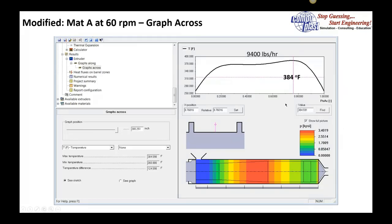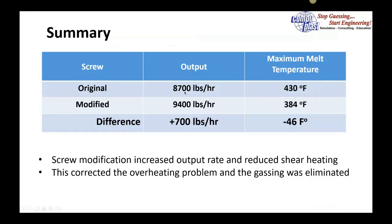When we look at the temperature across the channel, and because we had an increase in output by the way—we went deeper on the metering depth—at the same RPM we're getting a peak temperature now of 384 degrees Fahrenheit. If we compare these, the original design: 8,700 pounds an hour at 430 degrees peak temperature. The new design can get us up to 9,400 pounds an hour at 384 degrees Fahrenheit, a 46-degree Fahrenheit drop. They found they could operate at this condition and actually gain 700 pounds an hour in production without the problems associated with the screw causing overheating.